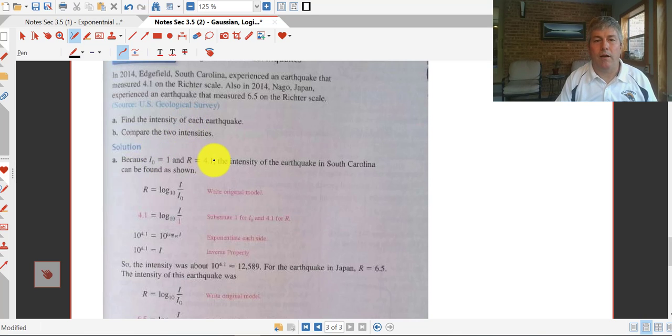So because i sub 0 equals 1 and r equals 4.1, the intensity of the South Carolina earthquake can just be shown by substituting 4.1 in for r and log base 10 of i over 1. Solving for i, what we can do here, they say exponentiate each side. But really, this is in logarithmic form, and we can change it to exponential form. And we can see here that 10 to the 4.1 is equal to i. Log base answer equals exponent. So the exponent on 10 equals our intensity. And there is our solution. So 10 to the 4.1, put that into your calculator, and we get approximately 12,589.